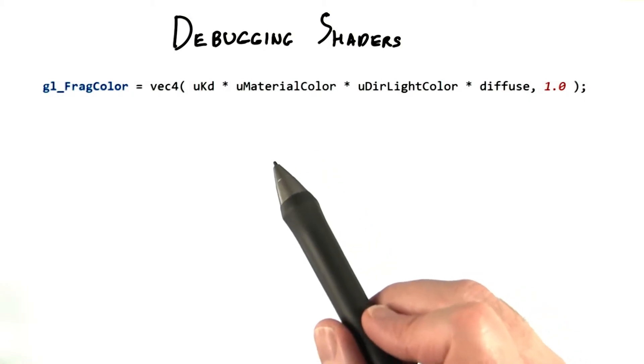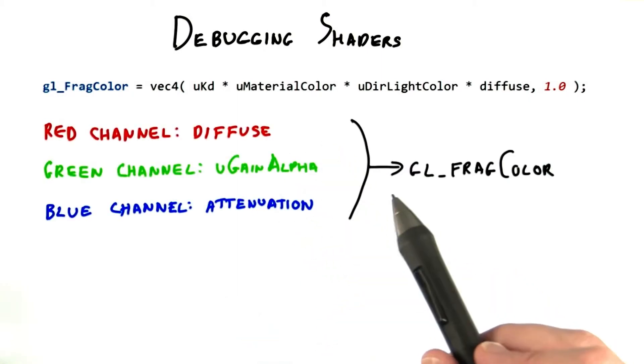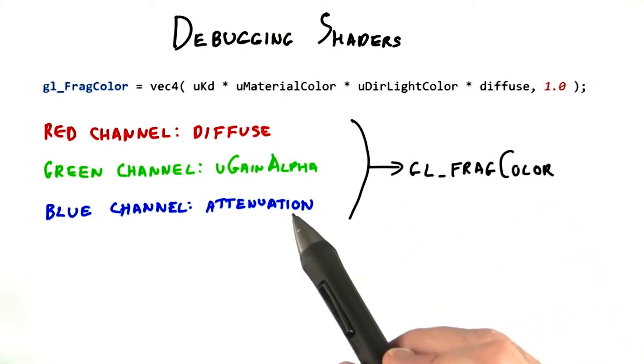The answer is to send various shader computations to the screen itself. In other words, instead of putting your final result into glFragColor, put these other intermediate values.